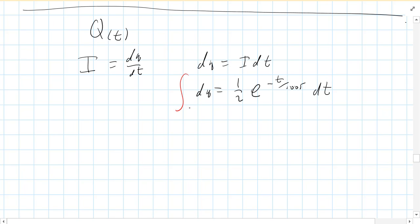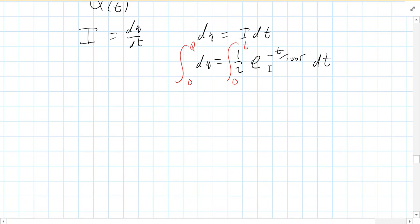So DQ equals, and our current is one half E to the negative T over 0.005. So that's times DT. So that is DQ. And now we're going to integrate both sides. So the left side, the charge starts off. We start with zero charge through the inductor, and then we have some charge sometime later. On the right side, we're opening the switch at time equals zero, and we're going to sometime later.